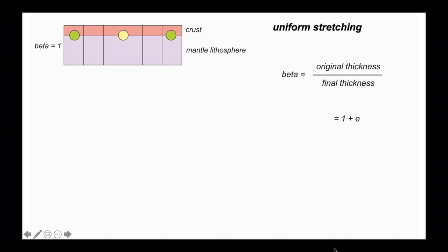This is the uniform stretching assumption. We'll quantify that stretching through the parameter beta, which is simply the original thickness divided by the final thickness. In terms of strain parameters in structural geology, beta equals 1 plus elongation, or 1 + e.